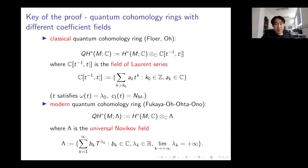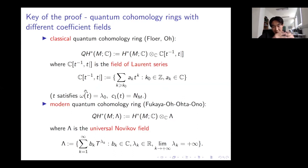Before outlining the proof, I want to explain the key idea, which is to work with different quantum cohomology rings. The classical quantum cohomology ring, for monotone symplectic manifolds, can be described using the field of Laurent series where the formal variable t represents a sphere of minimal positive area and minimal positive degree.